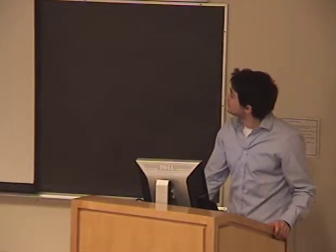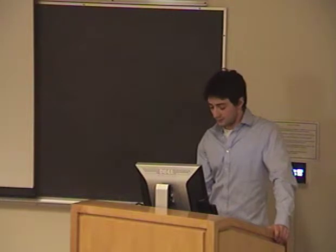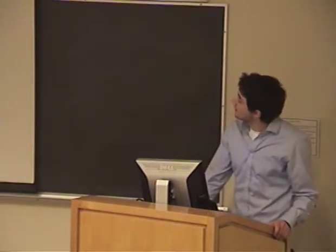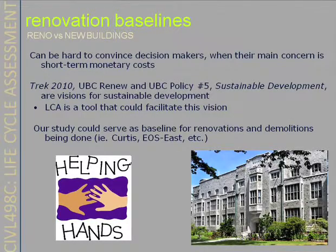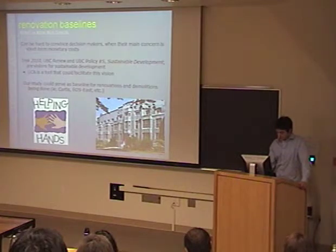Regarding renovation baselines: retaining and renovating buildings intuitively may seem like a sustainable choice, but quantifiable data is required to actually prove it. It can be hard to convince decision makers when their main concern is short-term monetary costs, especially when renovations can be more costly than new construction. The Provincial Ministry of Advanced Education has created guidelines stating that if a renovation at UBC costs more than 67% of new construction costs, the renovation will not be approved.